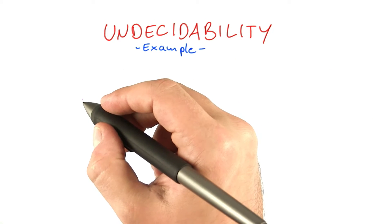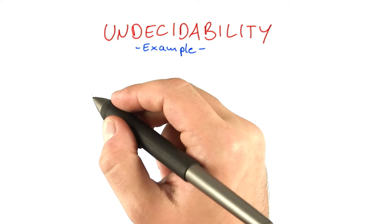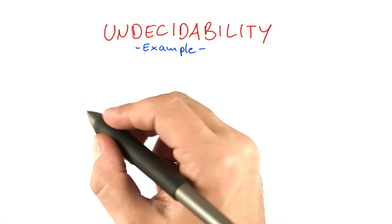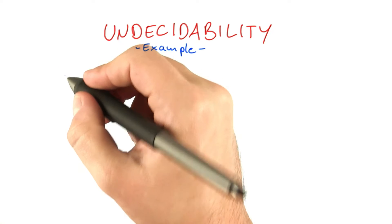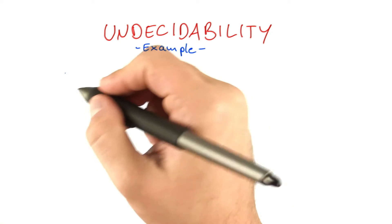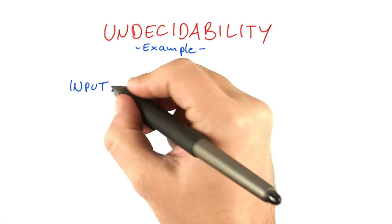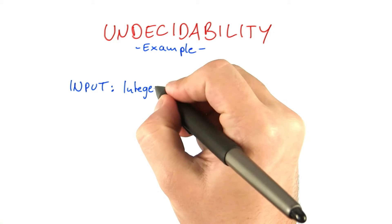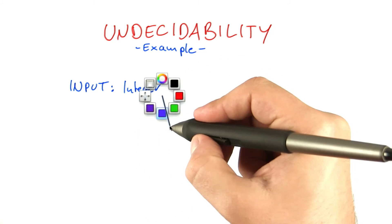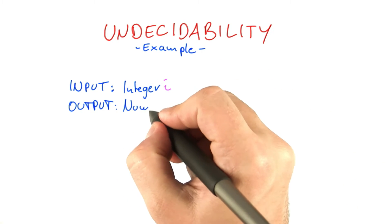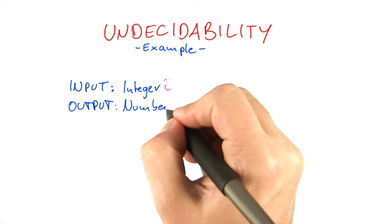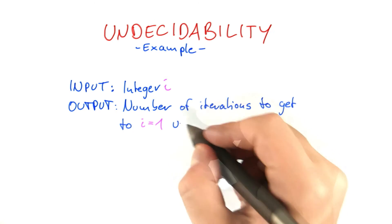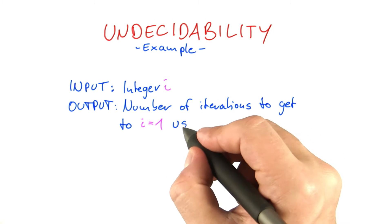It's not very practical, but it is an example of undecidability for a very simple program. Here's a simple example of a problem that is actually not decidable, although it's very simple to write. The input to that problem is an integer — we'll call it i — and the output is the number of iterations it takes to get to i equals 1 using the following two rules.